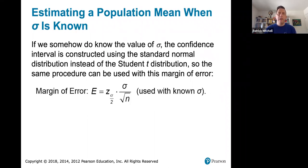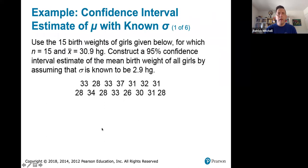Now in the rare instances where sigma is known, the confidence interval is constructed using the standard normal distribution instead of the student T distribution. So this looks just like the formula that we were using earlier. Remember that formula was E equals T sub alpha over 2 times S over the square root of N. So the only difference is you use your known population standard deviation instead of S and you use Z sub alpha over 2 instead of T.